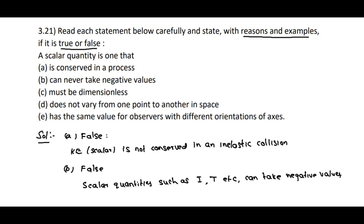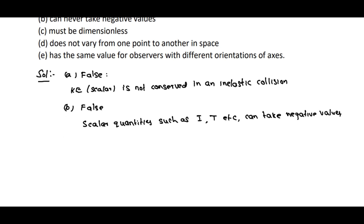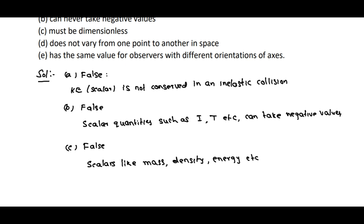Statement C — that a scalar must be dimensionless — is false. For example, scalars like mass, density, and energy are not dimensionless; that means they have dimensions.